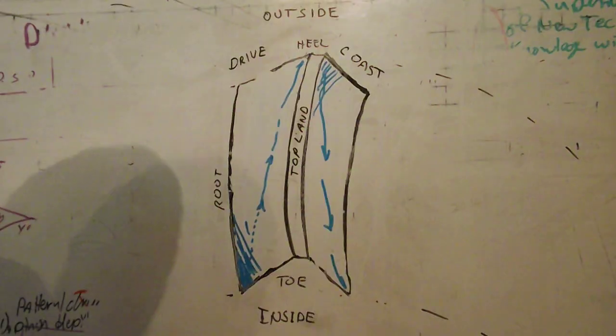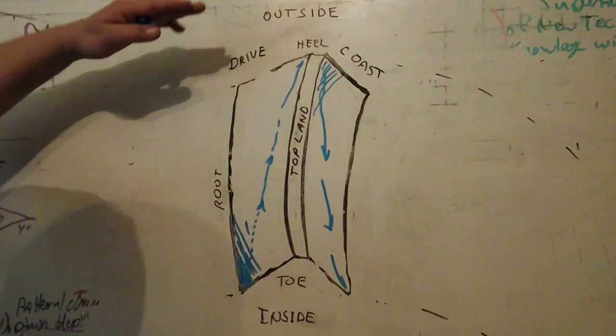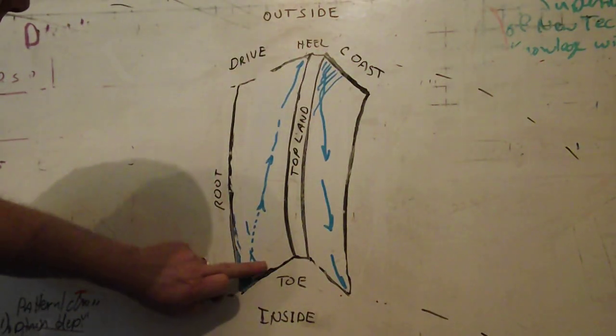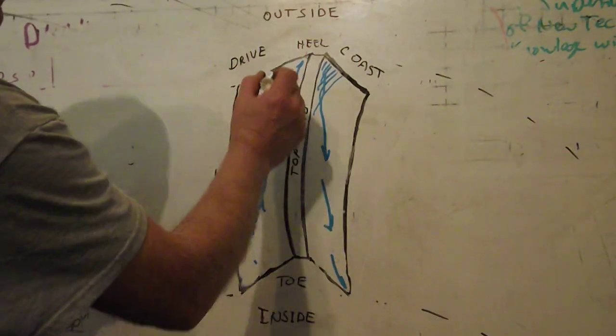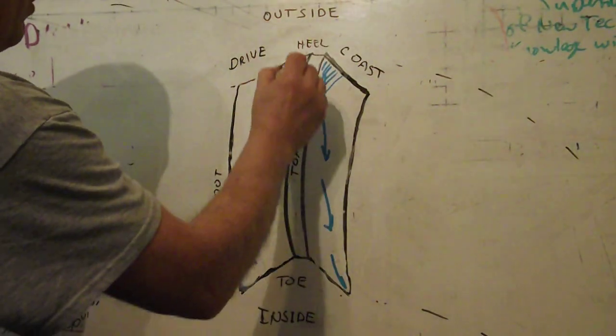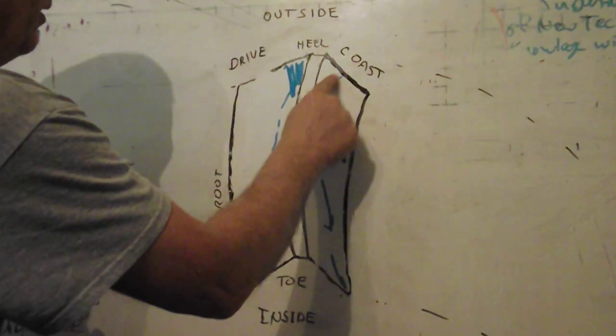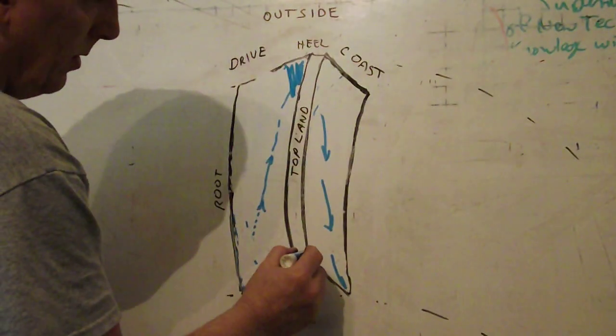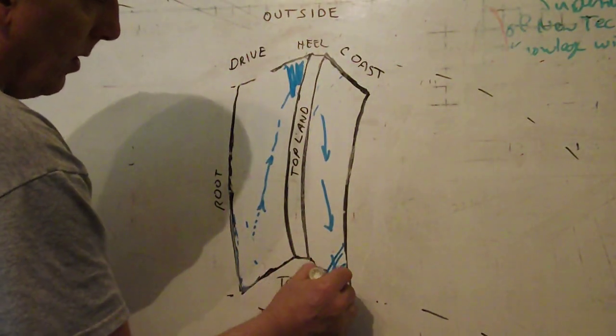Eventually, if you pull out from too deep to say sixty thousandths out too far, you'll get a reverse image. You'll have your pattern up in this corner on the drive side and now on this corner on your coast side.